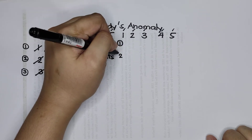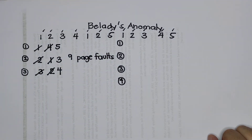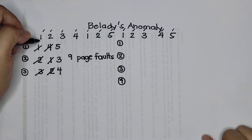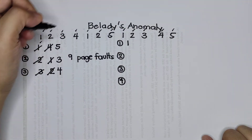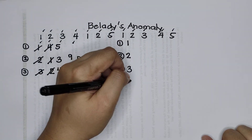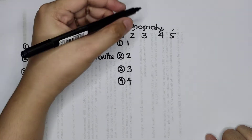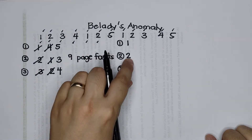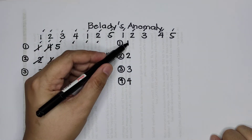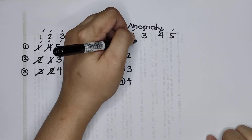With four frames, we have one, two, three, and four — because it can already accommodate four values from the reference string. Next is one, which is already there. Number two is also already there. Next we have five — the oldest value here is in frame number one, so replace one with five.